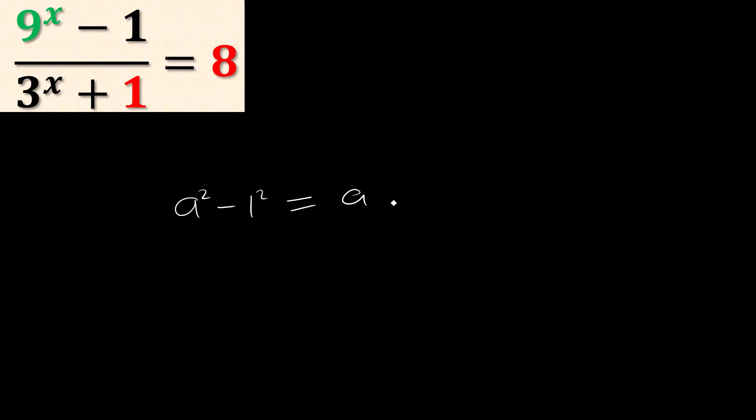So we can write the numerator as this. We can see 9 can be written as 3². So you can see (3²)^x. Now, a^(m*n) is the same as (a^m)^n, so this one can be written as 3^(2x).